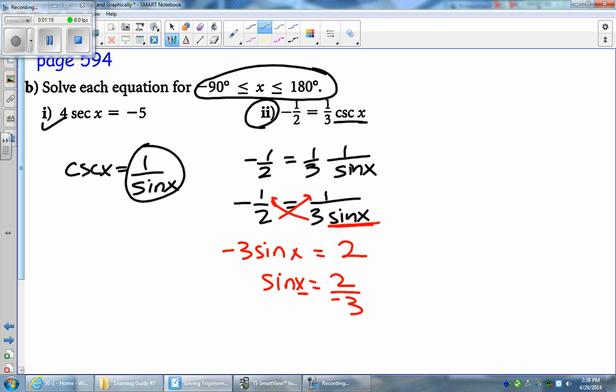Now, if you look on your unit circle, you're not going to find any angles where the sine of that angle is negative 2/3. 2/3 doesn't actually exist on the unit circle. So we're going to go ahead and use our calculator, a combination of our calculator and the CAST rule.